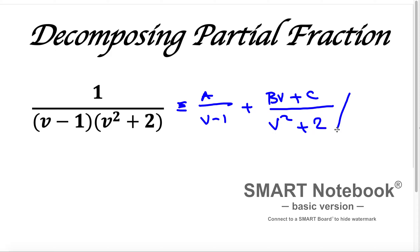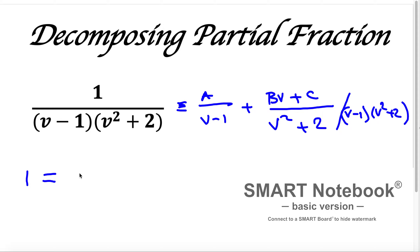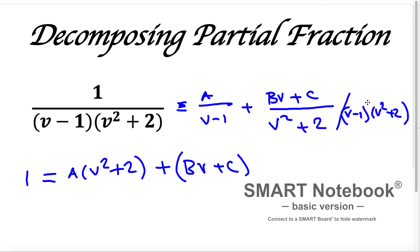We write it in this form and now we multiply the entire equation by (v minus 1) times (v squared plus 2). Multiplying everything, the denominator simplifies: (v minus 1)(v squared plus 2) cancels out, leaving just 1 on one side. For the A term, v minus 1 cancels, leaving v squared plus 2. For the Bv plus C term, v squared plus 2 cancels, leaving v minus 1.